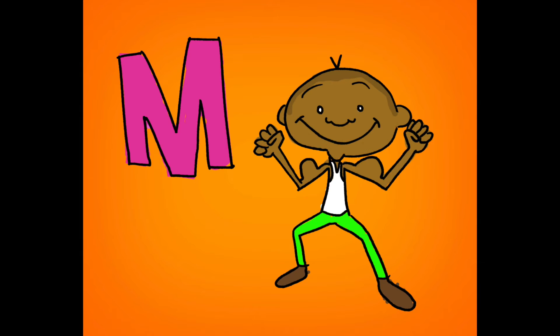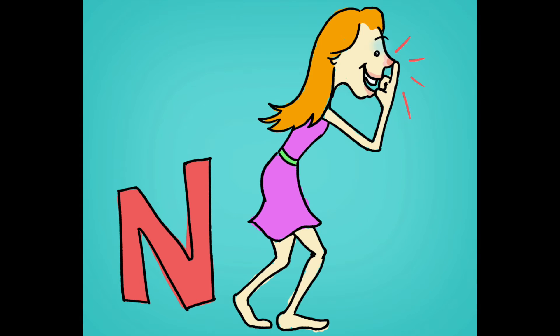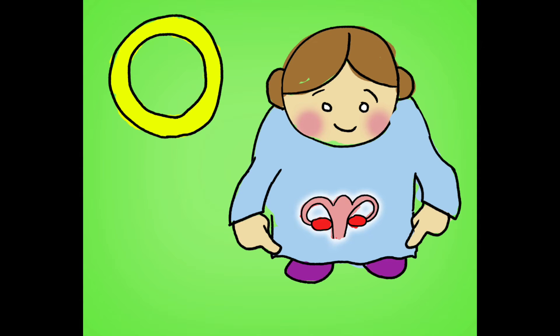M is for muscle, muh muh, muscle. N is for nose, nuh nuh, nose. O is for ovary, only girls have those.